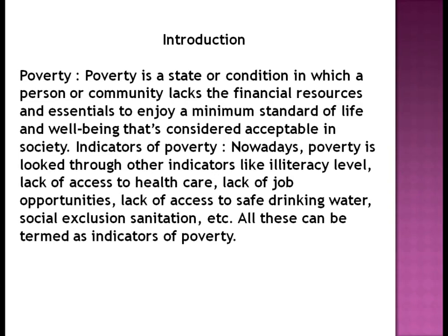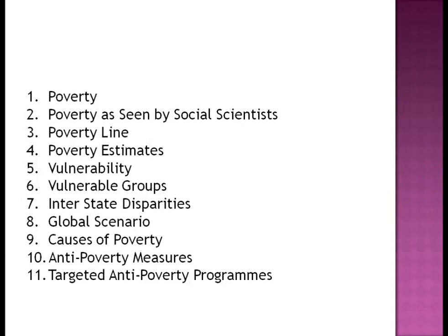Moving further, in this revision we are going to study: first, the meaning of poverty; poverty as seen by social scientists; poverty line; estimation of poverty; vulnerability; vulnerable groups; interstate disparity; global scenario; causes of poverty; and the last two points — anti-poverty measures and targeted anti-poverty programs.